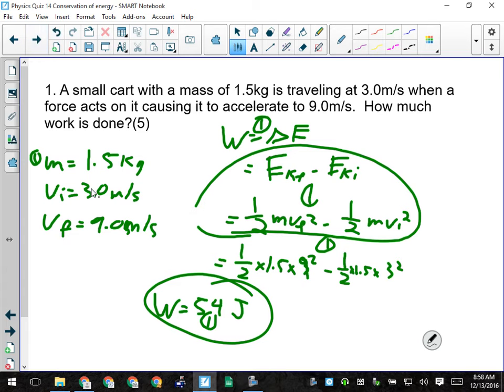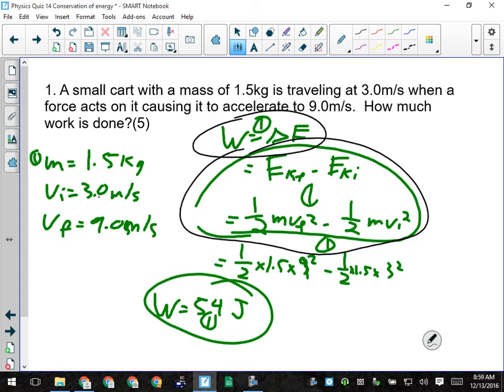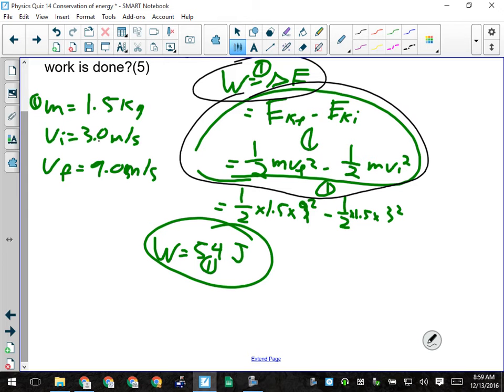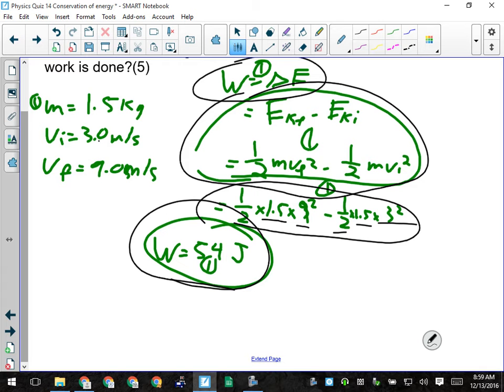The mass was 1.5, the initial speed 3, the final speed 9 meters per second. Second mark, work is a change in energy. And we are looking at a change in kinetic energy here. So if they had something like this showing final kinetic minus initial kinetic or they had the formulas plugged in, that will be their third mark. Their fourth mark will be for plugging in the numbers correctly.